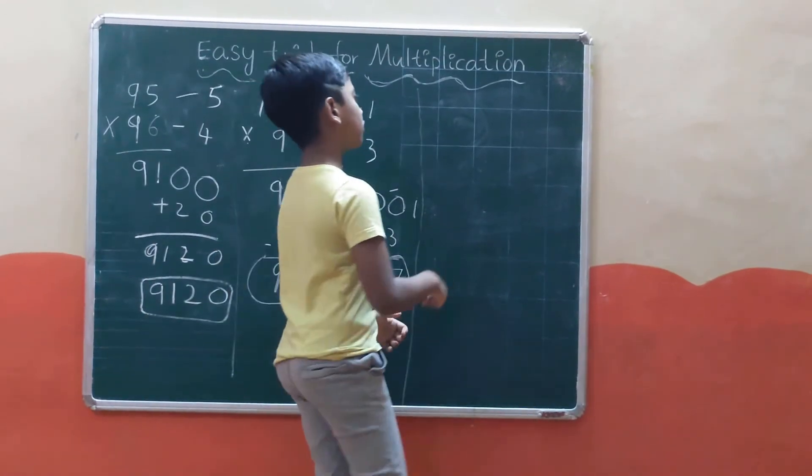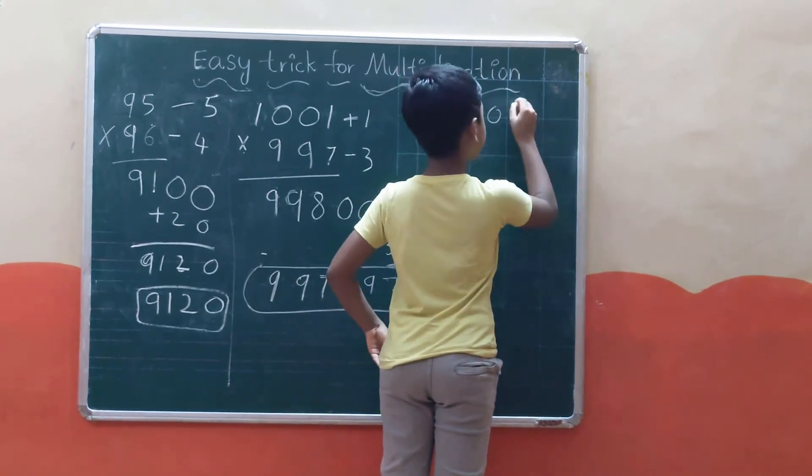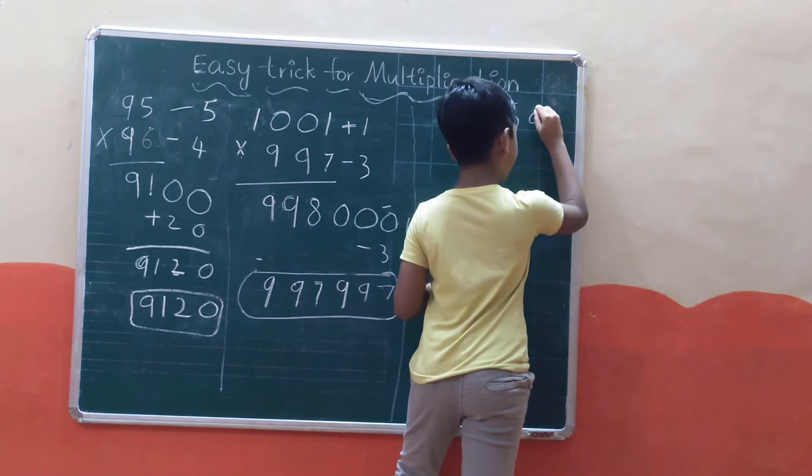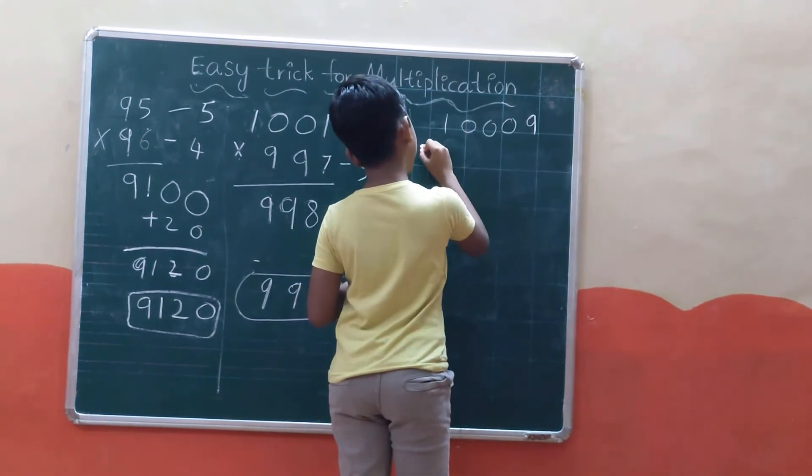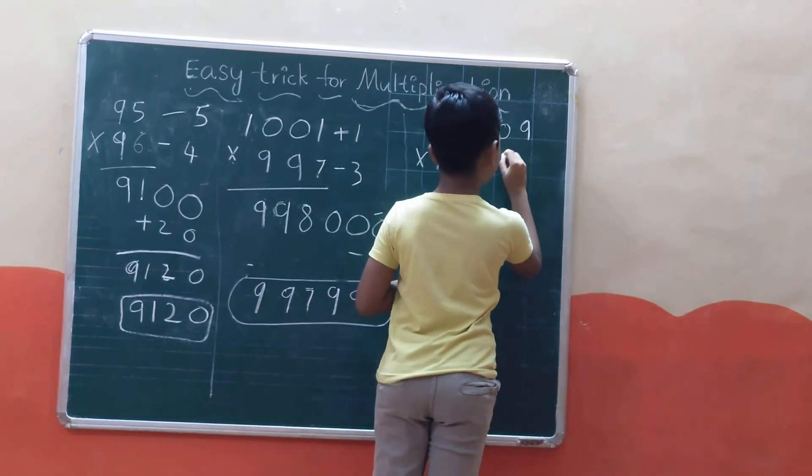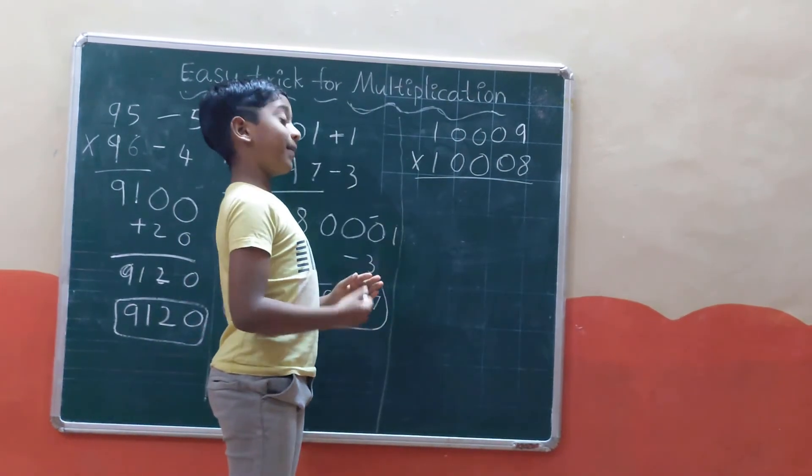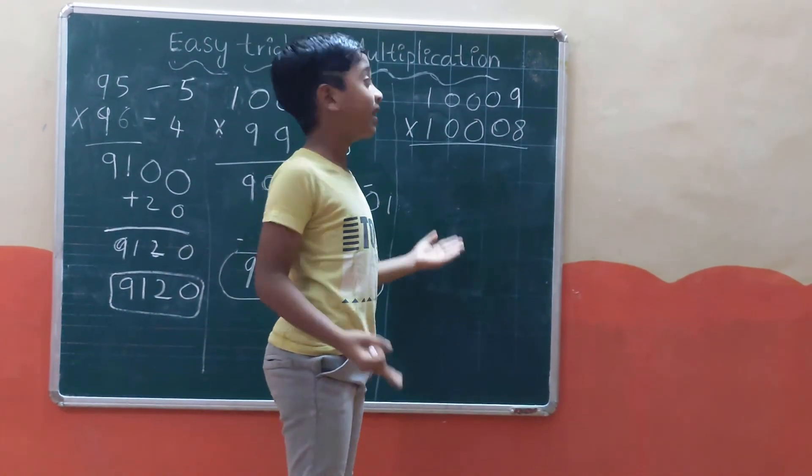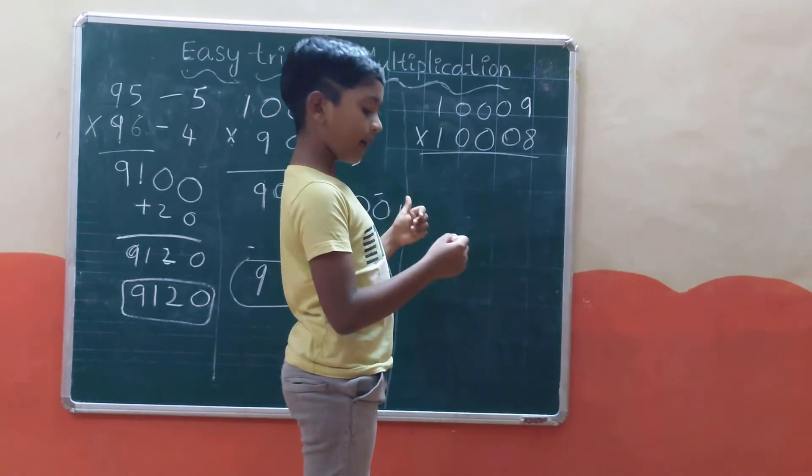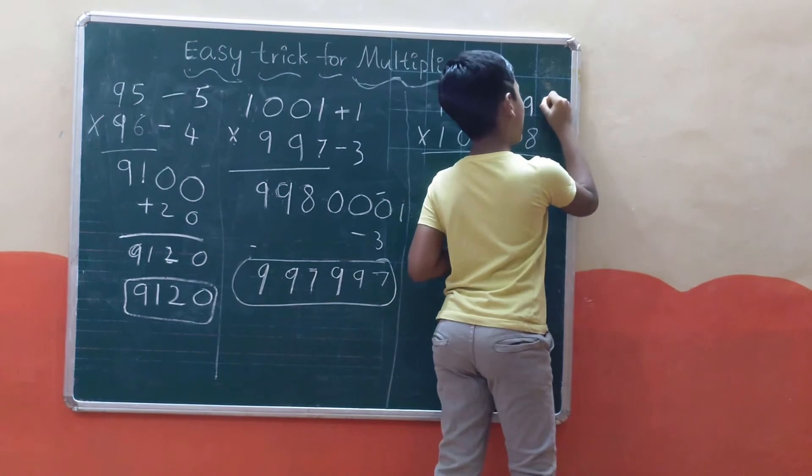Now let's take the third example: 10009 times 10008. This is getting really big, but you can solve it. In 10000, the first number has 9 more, so plus 9. The second number has 8 more, so plus 8.